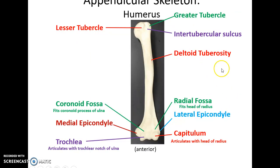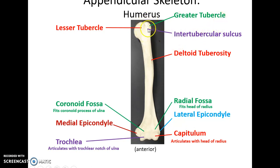Then you have the humerus. It articulates with the scapula. You have the proximal end that has the lesser tubercle sticking out anteriorly, and the greater tubercle sticking out laterally. Between them is the intertubercular sulcus. About halfway down the shaft you have the deltoid tuberosity.